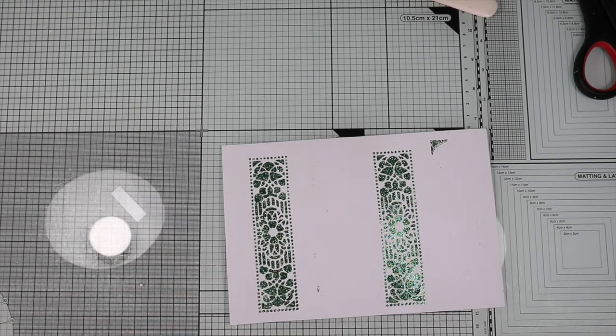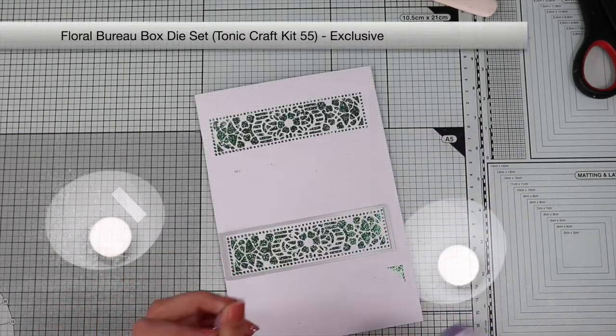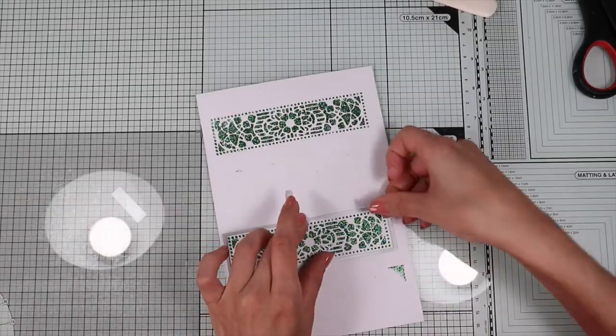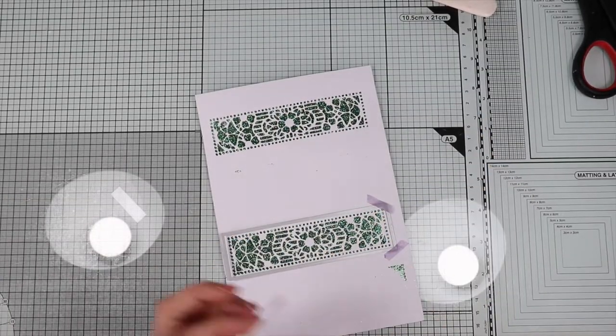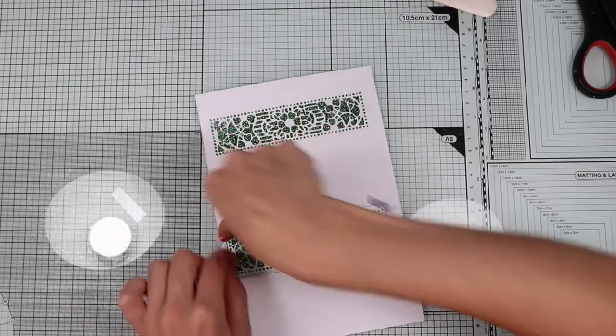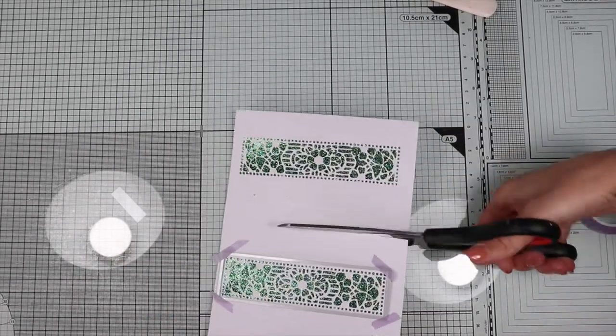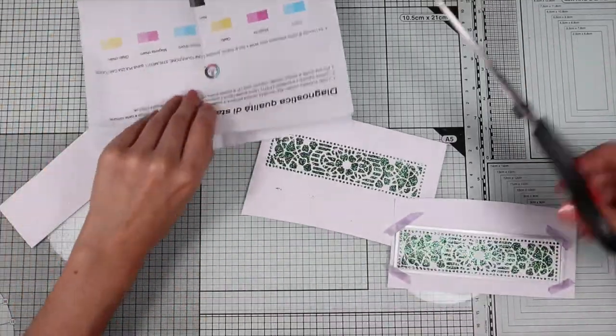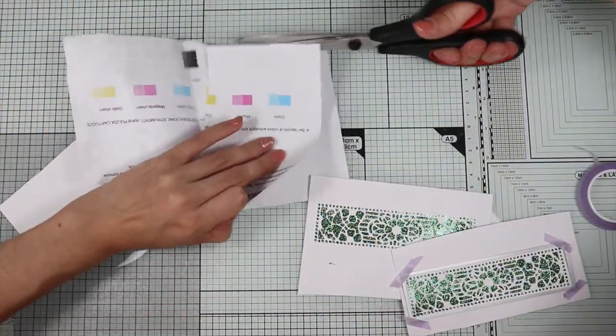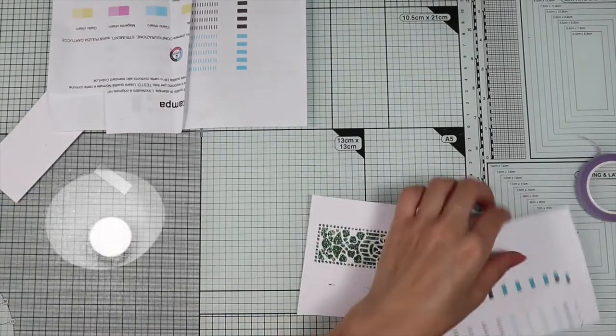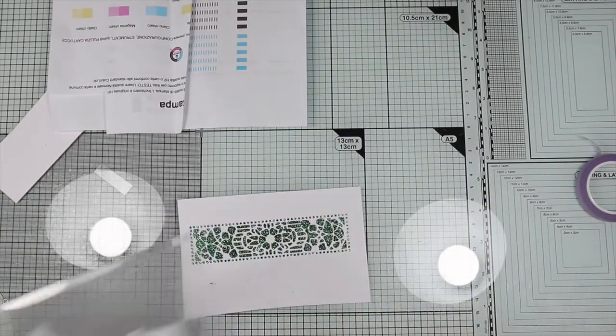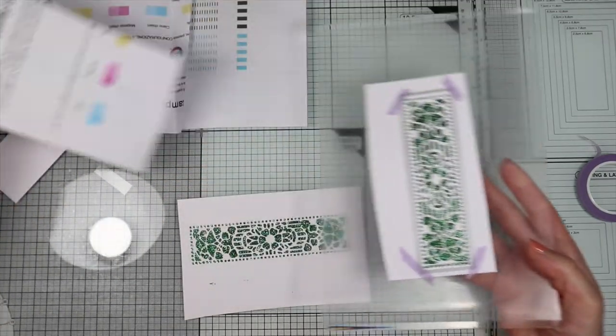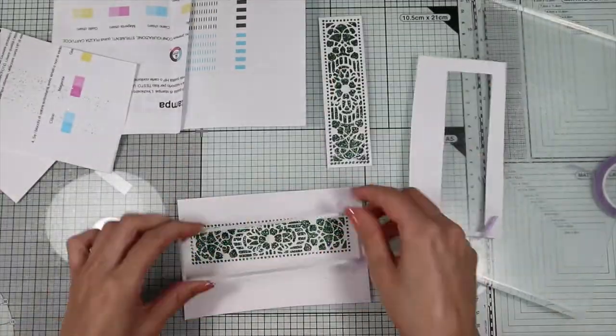Next, with the rectangle die of the kit, I'm going to die-cut the stencils forming two panels. In order not to dirty the whole cutting plate of the die cutter machine, I'm going to put a protective sheet. In fact, look at how much glitter is left on. I repeat everything for the second panel.